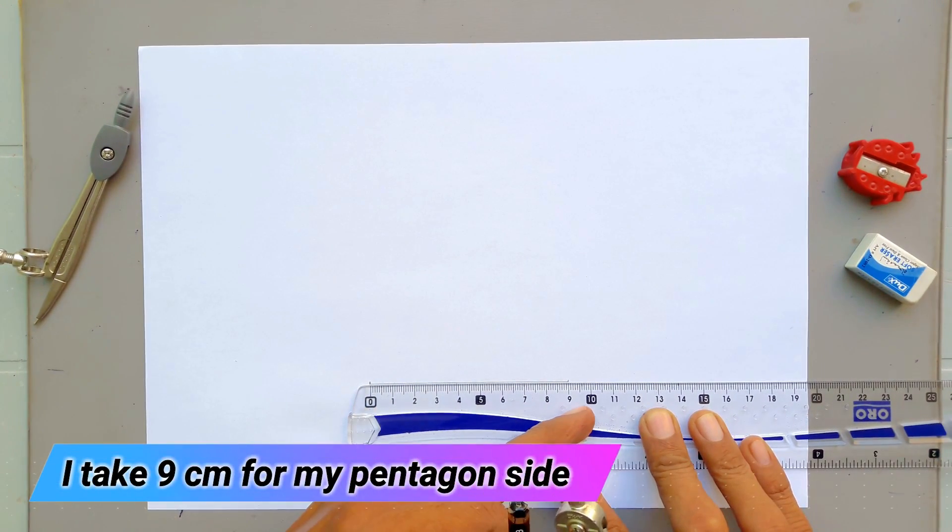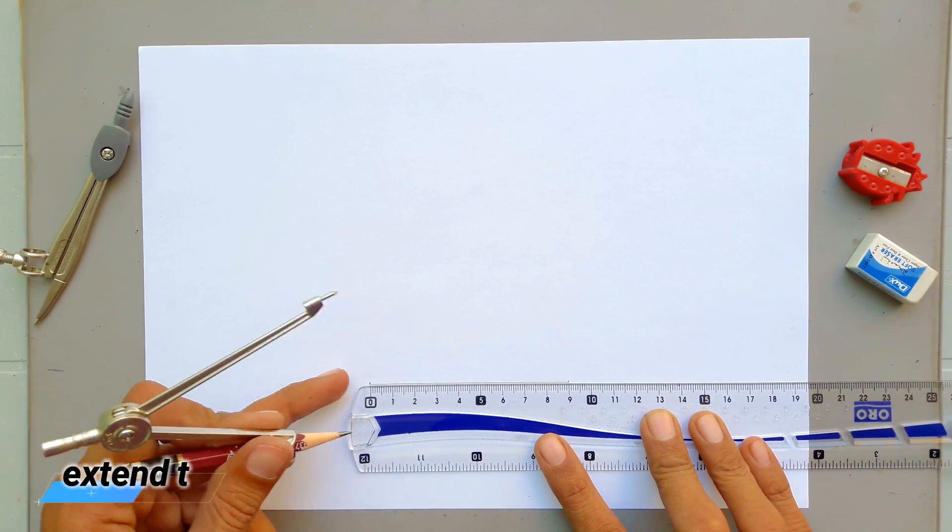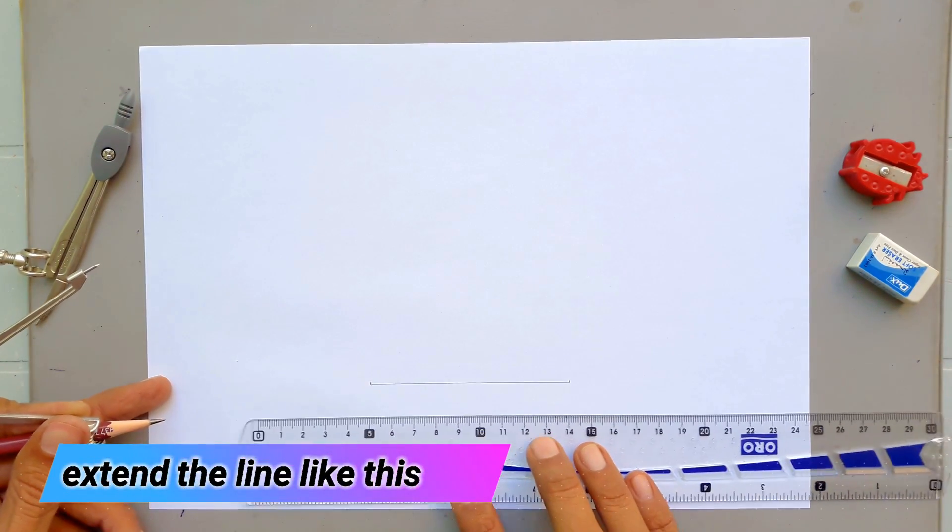I take 9 cm side for my pentagon. Extend the line to the left like this.